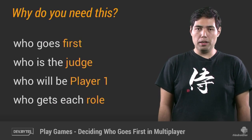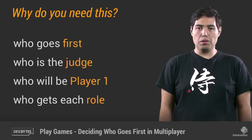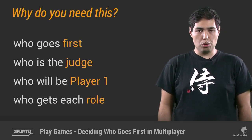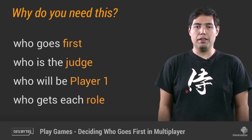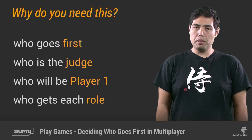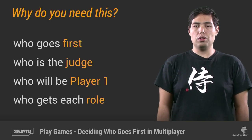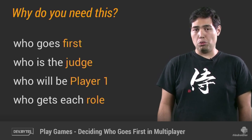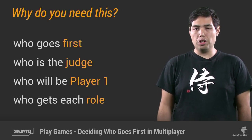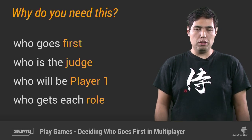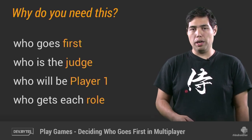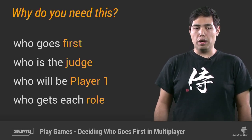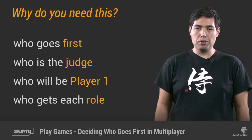Remember that multiplayer is symmetrical, so no one is naturally special — there's no server or anything like that. But sometimes you need to choose one of the players to have a special role, like to be the judge of a match, to make the first move, or you need to decide who's player one, who's player two, and so on. So how do you do this?